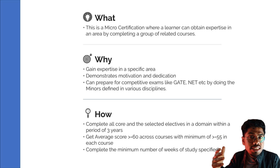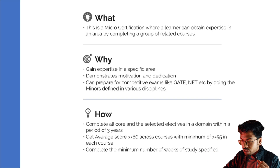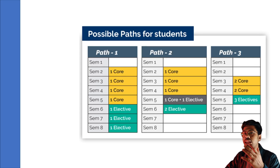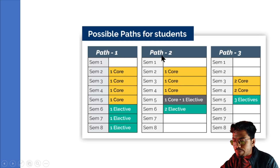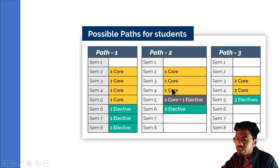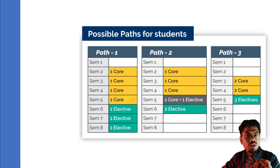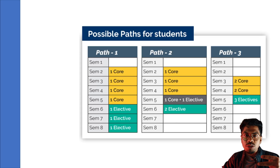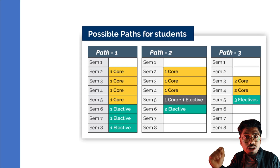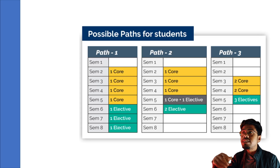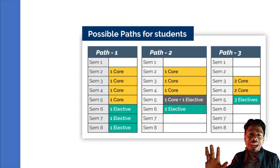If you are pursuing BTech or MTech and wondering how to take these courses, NPTEL has provided a guidance slide. For BTech students, you can follow path one, path two, or start from anywhere — there is no restriction. The main requirement for VLSI specifically is to complete three core courses and two elective courses, where completing means taking the certification exam as well.